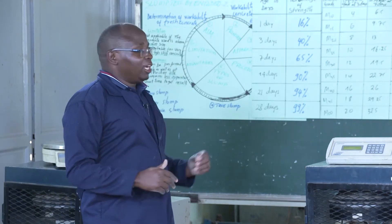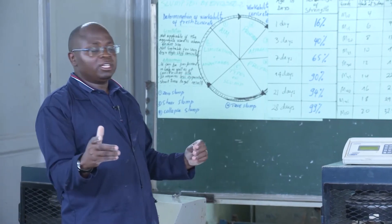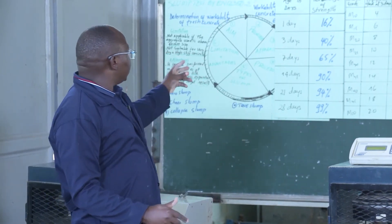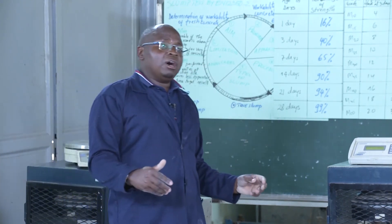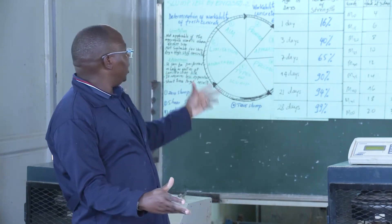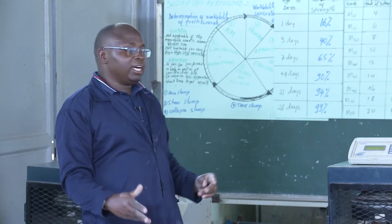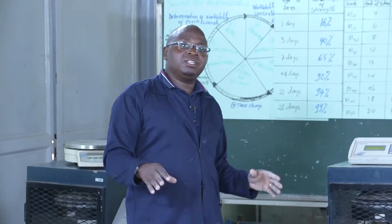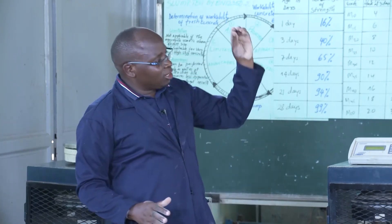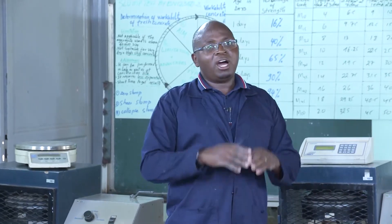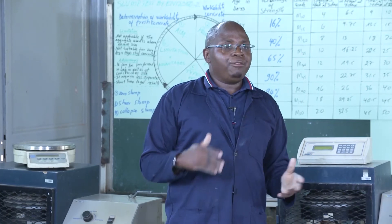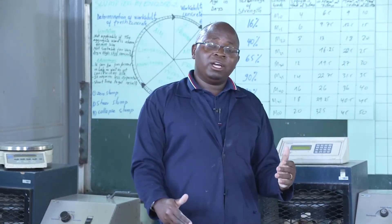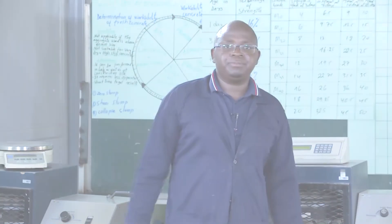We have different grades or classes of concrete with different expected values. For example, for M10 at three days we need 16%, which equals 4 megapascal. For our class, the requirement at one day is 12, at seven days 19.5, at 14 days 27, and at 28 days it is 30. According to the requirement and the test we performed, our concrete has passed. This test is useful, practicable, and critical for construction work. Thank you.